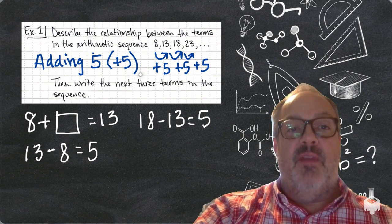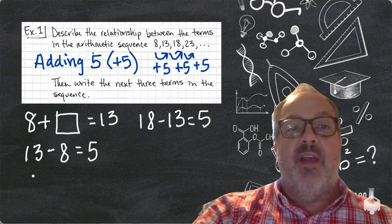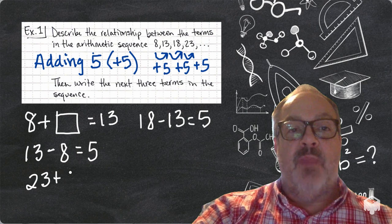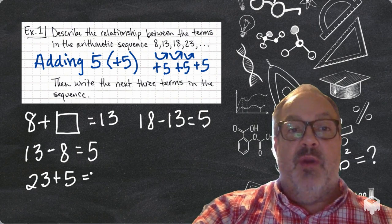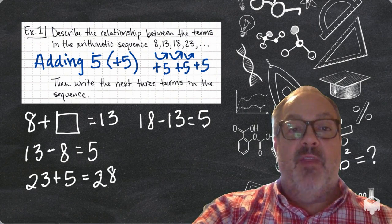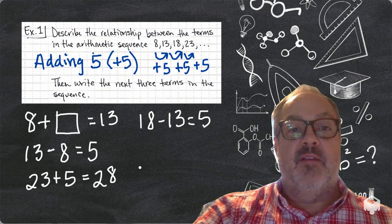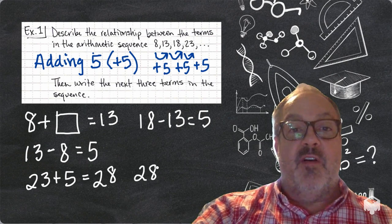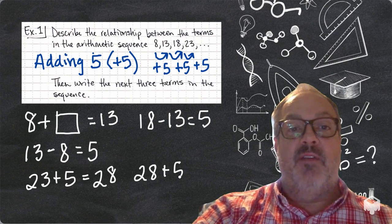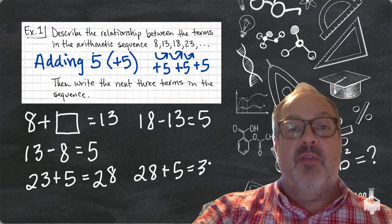The next step in this problem is that I want to find out what the next three terms are in the sequence. So, I know I ended at 23, so I'm going to add 5 to that. And I get 28. I'm going to start at 28, add 5 to that. And I get 33.